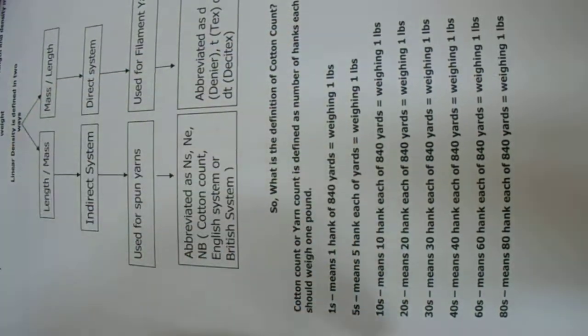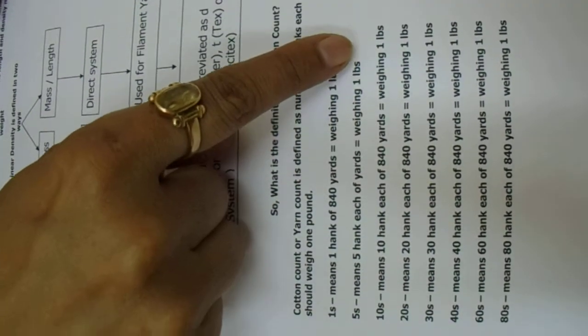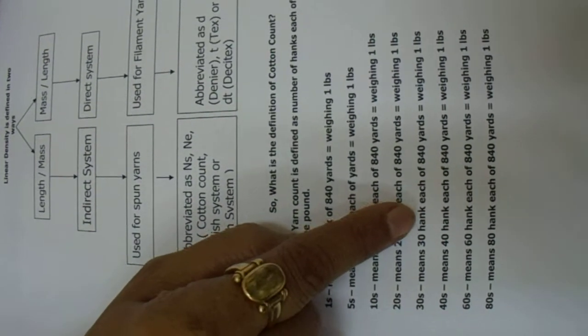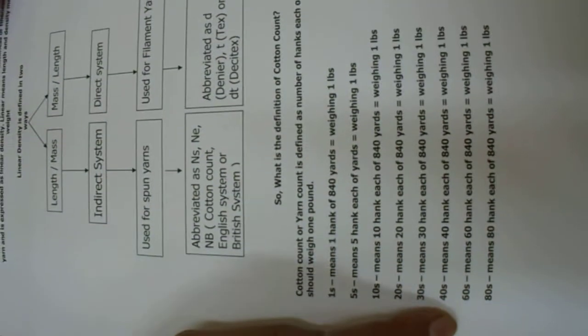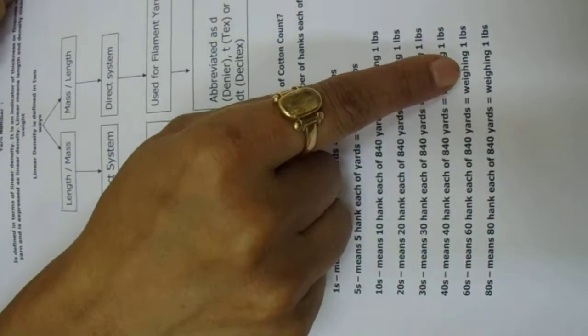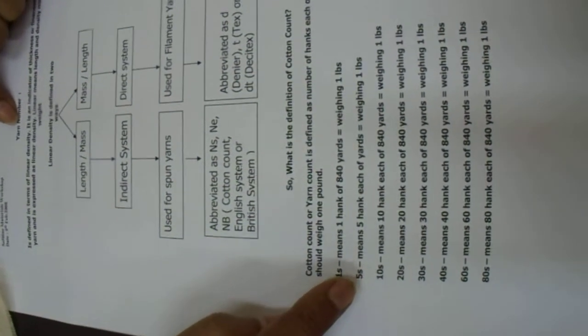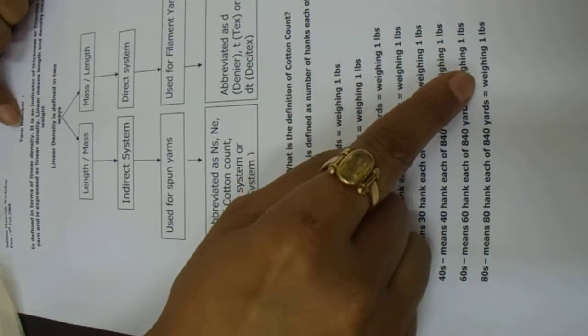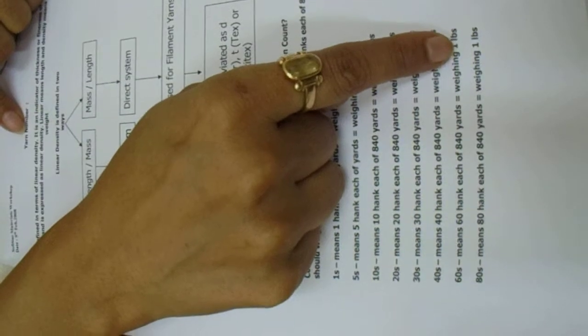If the count is 10s, then 10 hanks each of 840 yards weigh one pound. 30s means 30 hanks each of 840 yards weigh one pound. 60s means 60 hanks each of 840 yards weigh one pound. 80s means 80 hanks each of 840 yards weigh one pound. Therefore, the higher the yarn number, the finer the yarn, because the length keeps increasing while the weight remains the same.